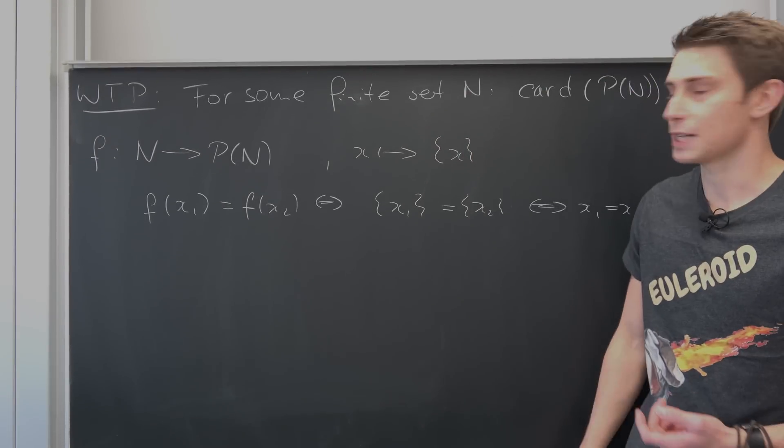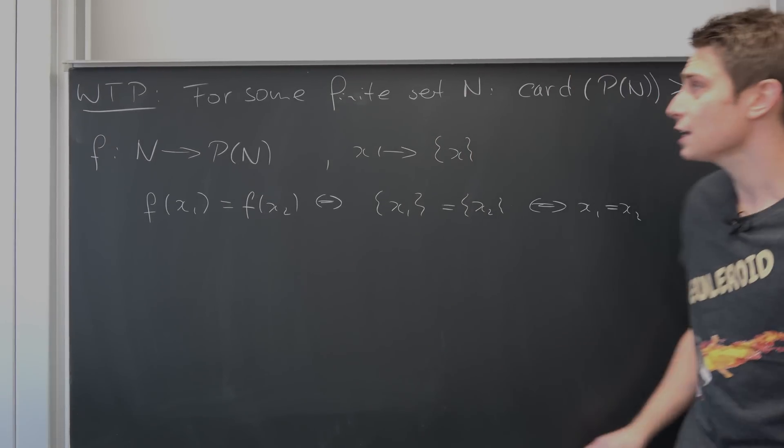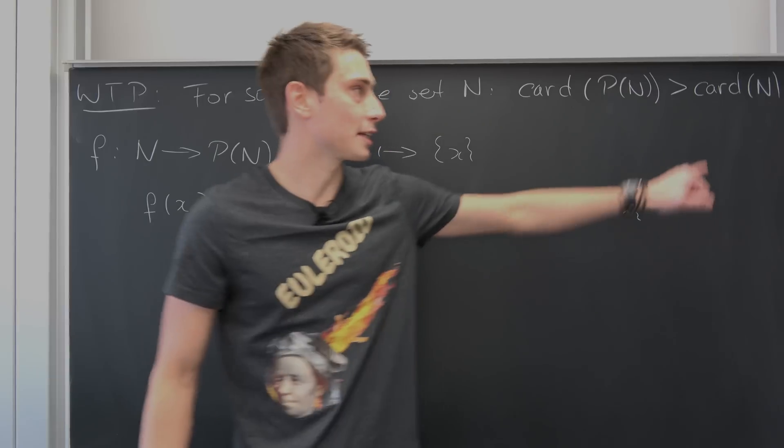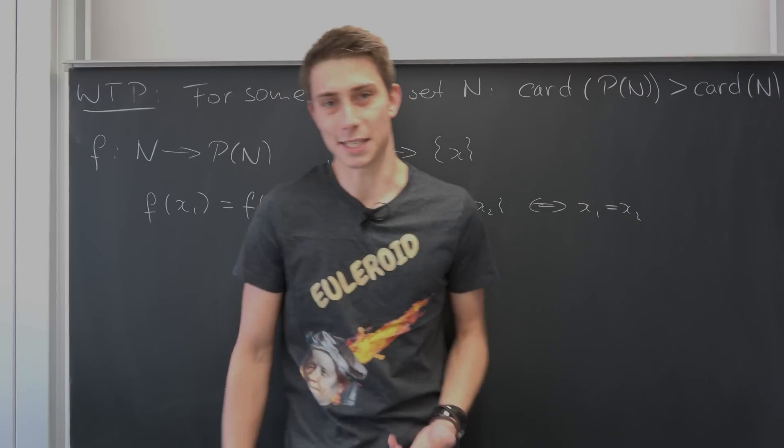Meaning at the moment that if there would be a bijection, the cardinality of the power set of n is greater or equal to the cardinality of the set itself.